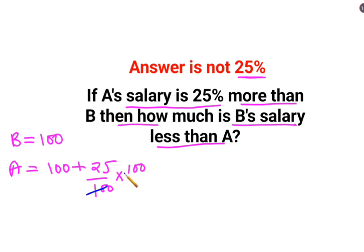When I took 100, now you have to see things are becoming very easy. These are canceling, so A's salary came out very easily, we got it as 125. Now we need to see how much is B's salary less than A.